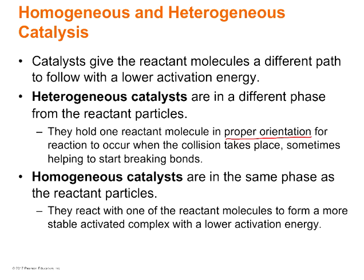Homogeneous catalysts are in the same phase as the reactant particles. For instance, if chlorine is in the gas state and ozone is in the gas state, then chlorine would be considered a homogeneous catalyst. Homogeneous catalysts react with one of the reactant molecules to form a more stable activated complex with a lower activation energy. These are two different ways to speed up a reaction — using a heterogeneous or a homogeneous catalyst — depending on the reaction and what works better.